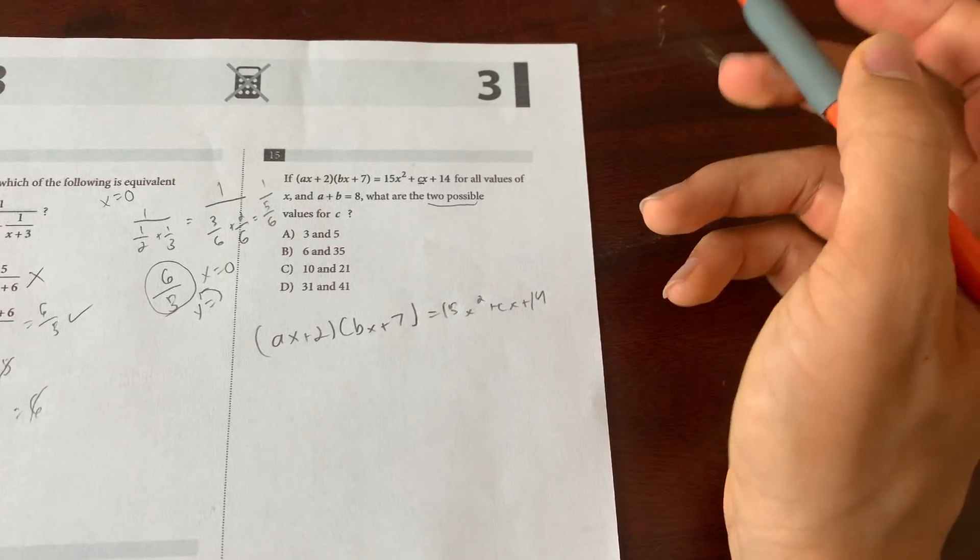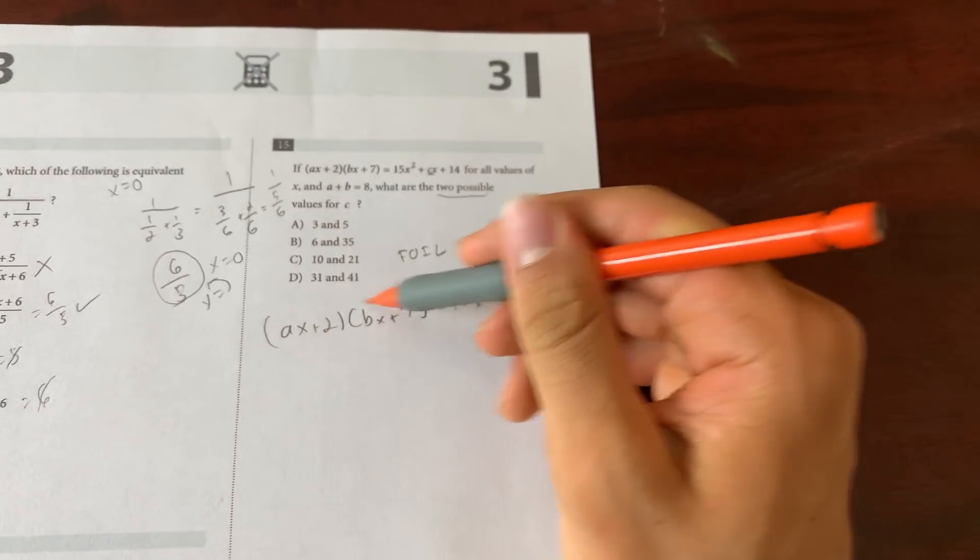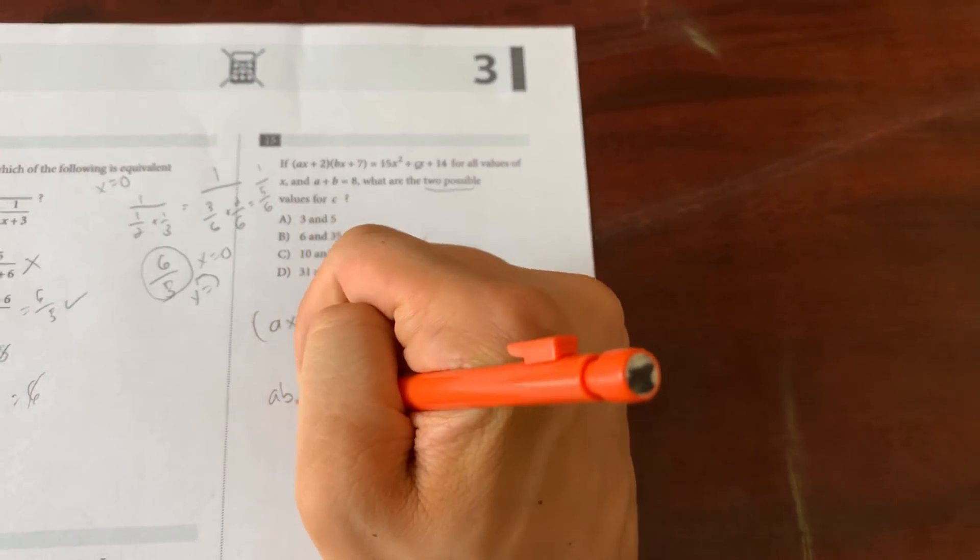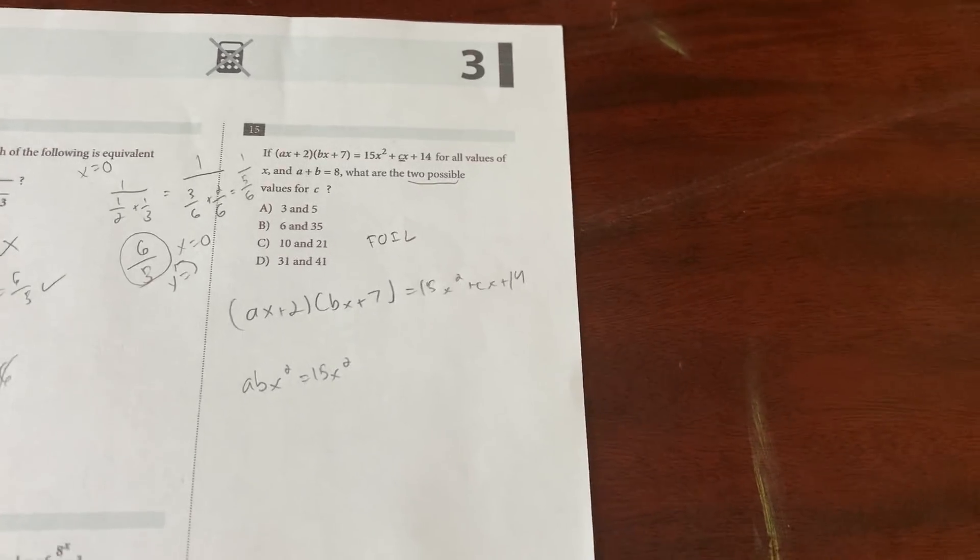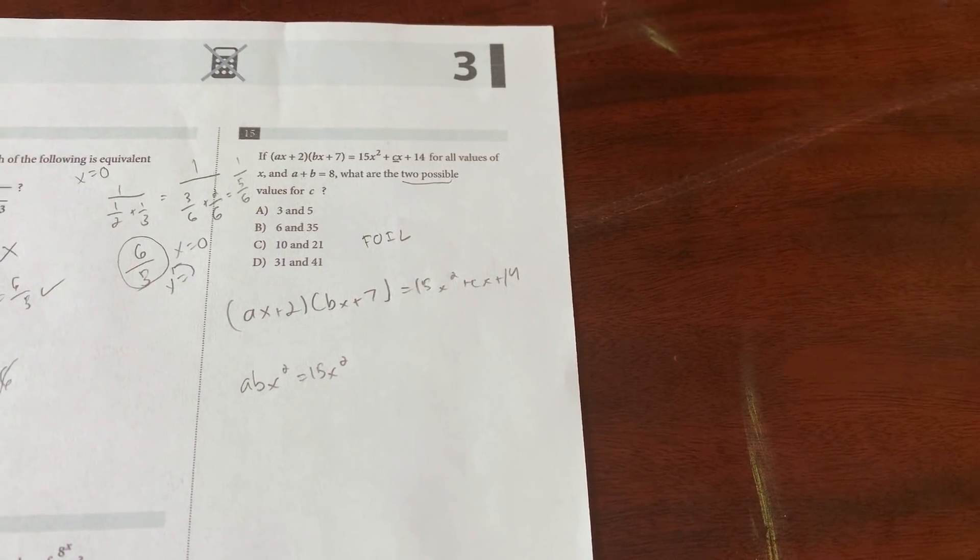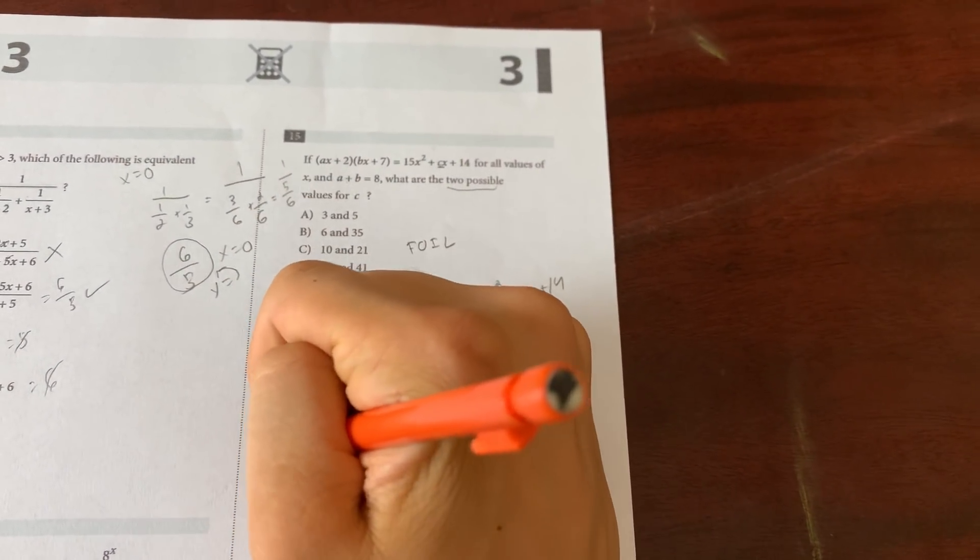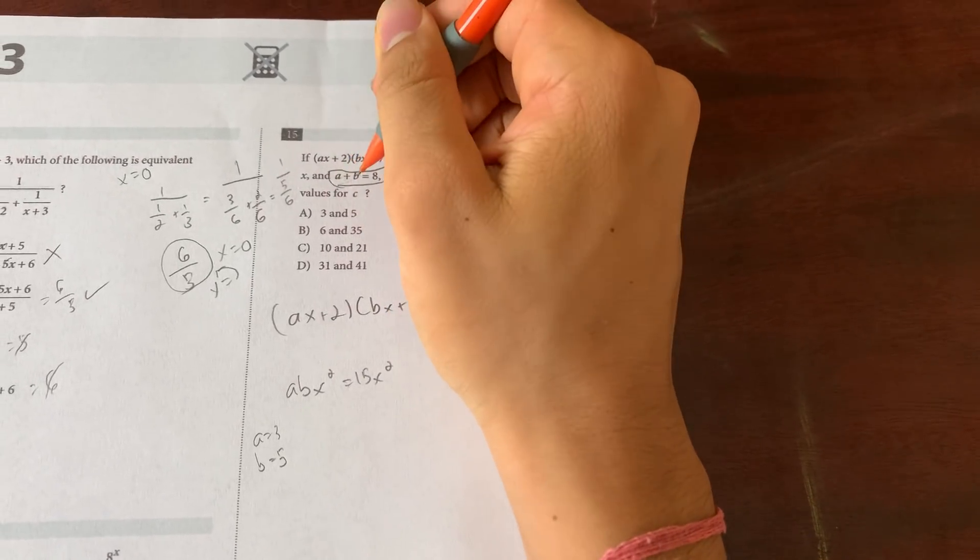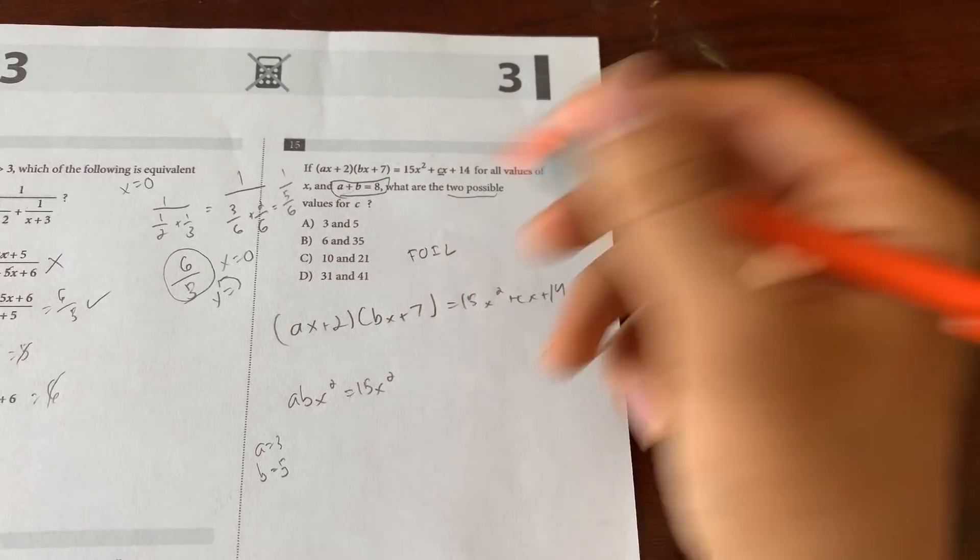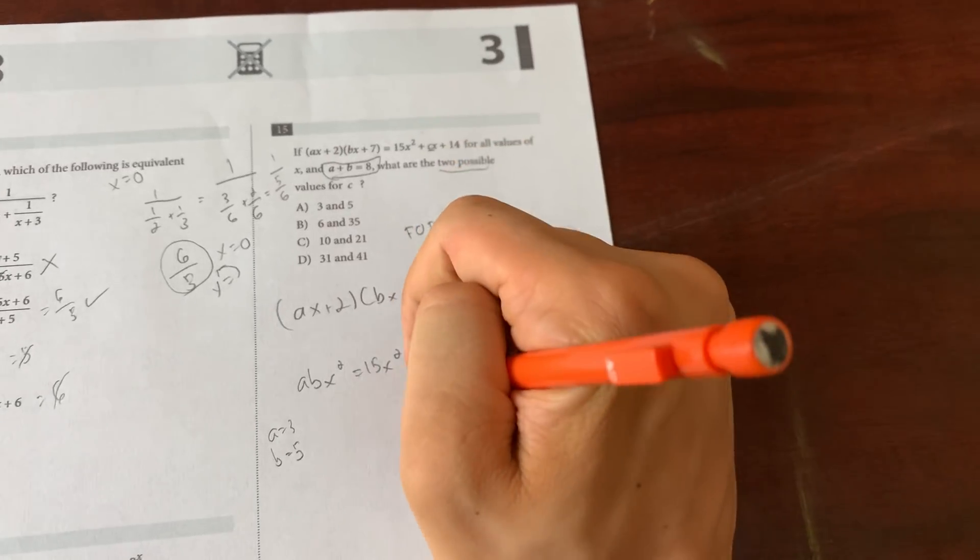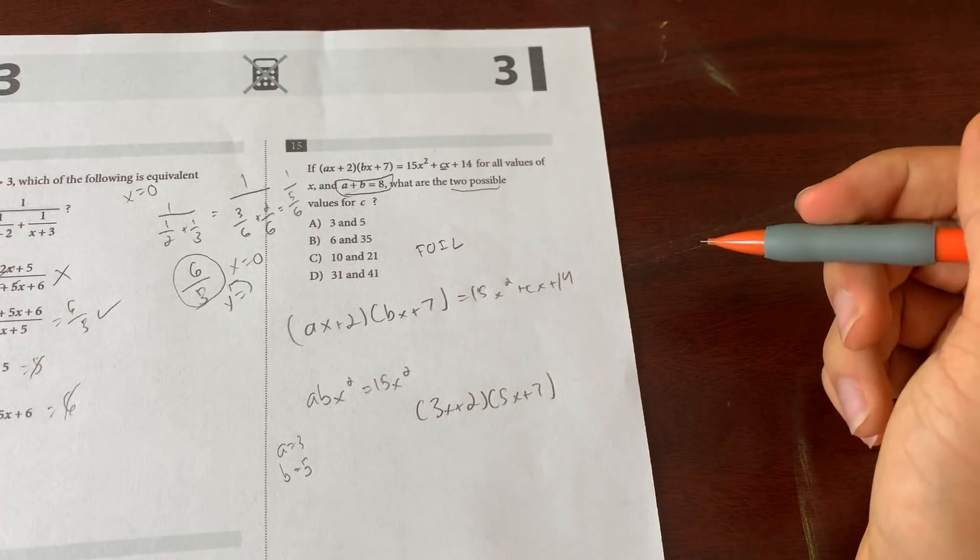All right, so I know if I use FOIL - first, outer, inner, last - the first terms multiply together which will give me x² which will give me abx² need to equal 15x². So what can a and b be? Well what times what gives you 15? 3 times 5 gives you 15, so let's make a equal 3 and b equal 5. Oh yeah, and a+b equals 8, so you have to pick two numbers that when added together give you 8 and when multiplied together give you 15. So 5 and 3 works fine.